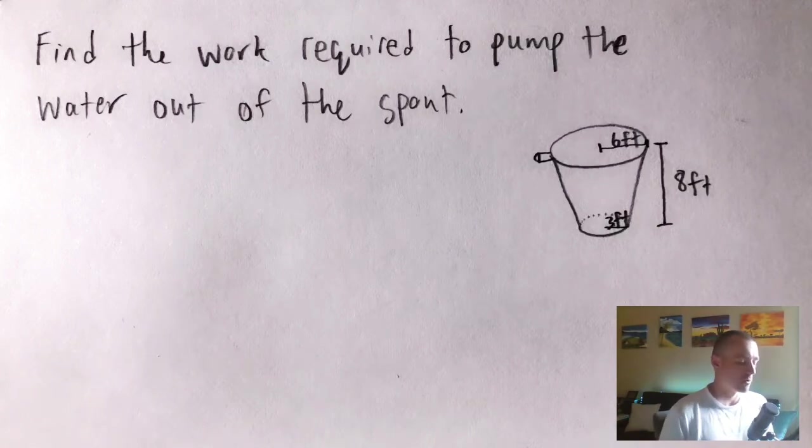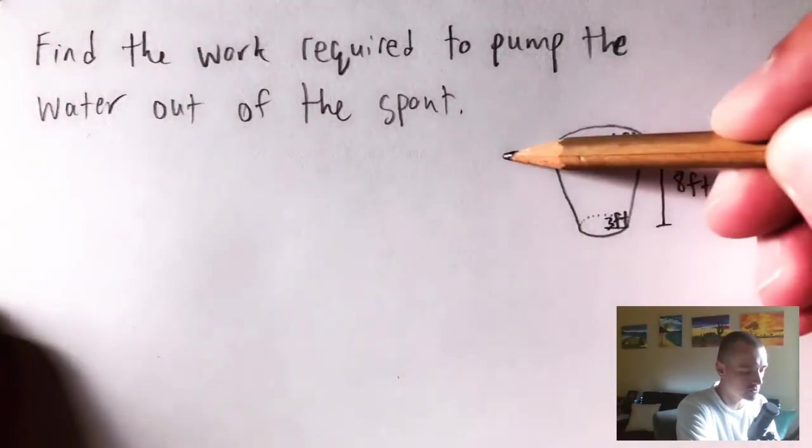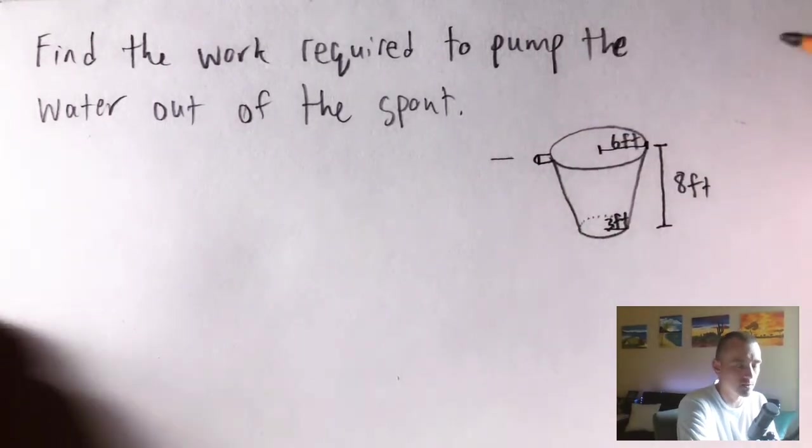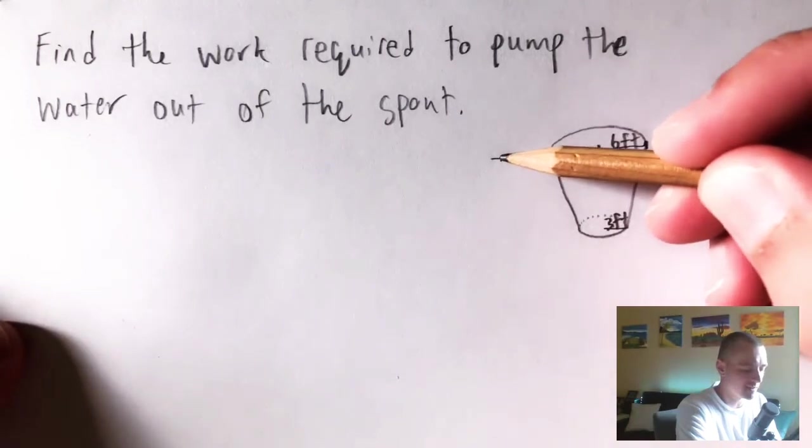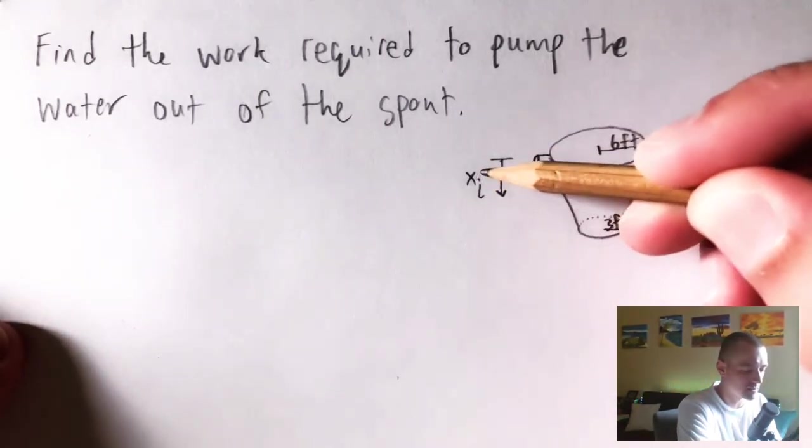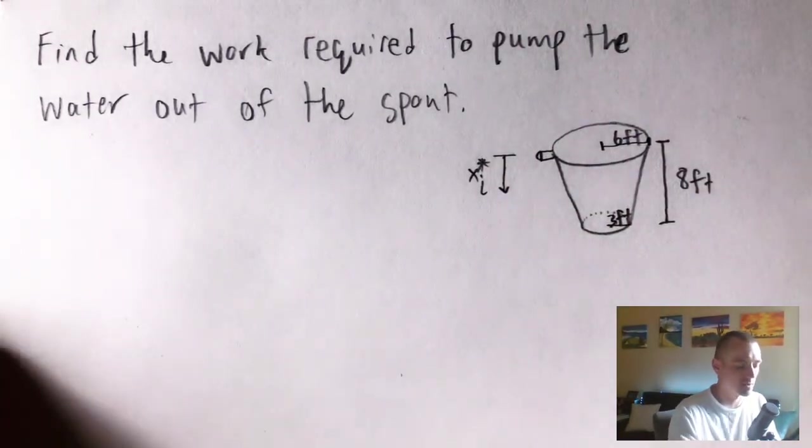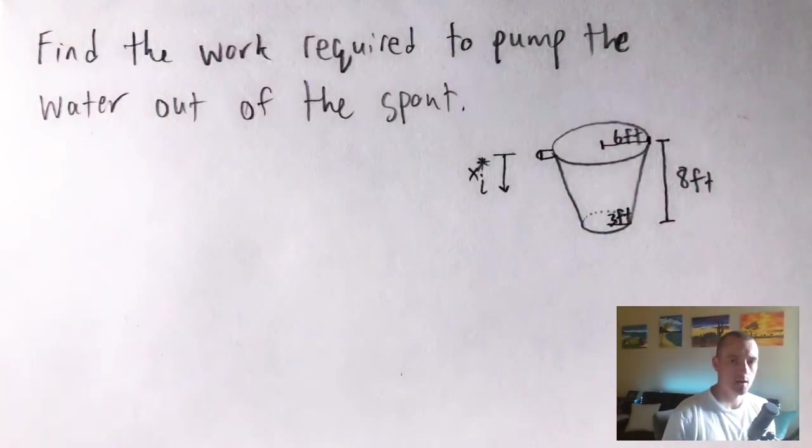As usual we're going to want to start by labeling our xi star variable in our drawing here. You can pretty much call it whatever you want to call it as long as you account for that accordingly, but I think it's usually easiest to just say that your xi star is basically the distance that you have to pump your ith layer out. So basically the distance from the spout down into our tank as we go through this.